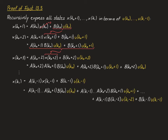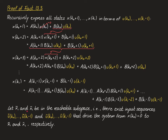Continuing this recursion up to x(k1) = A(k1-1)x(k1-1) + B(k1-1)u(k1-1), we obtain a formula expressing x(k1) in terms of all the inputs from u(k0) up to u(k1-1). Now let x̃1 and x̄1 be any two elements of the reachable subspace, meaning there exist input sequences ũ(k0),...,ũ(k1-1) and ū(k0),...,ū(k1-1) that drive the system from the origin to x̃1 and x̄1 respectively.